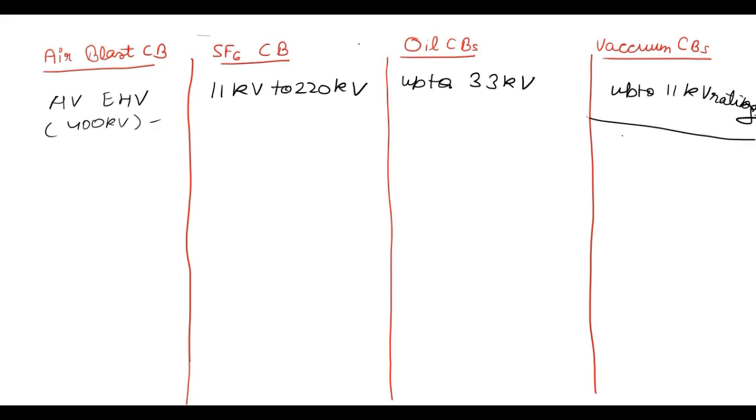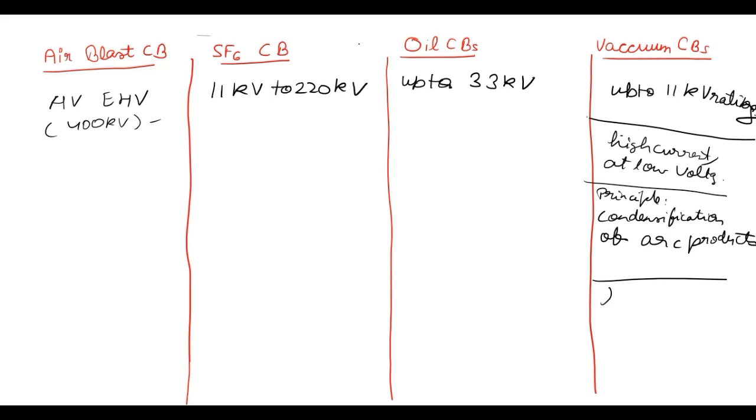Now vacuum circuit breaker. These are used for interrupting high current at low voltage. It basically works on condensification of arc products like copper vapors, etc. And these have least maintenance. So this was all about vacuum circuit breaker.